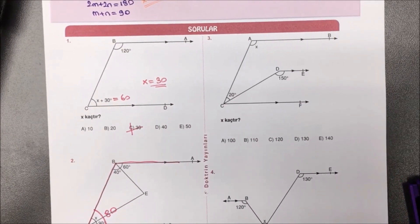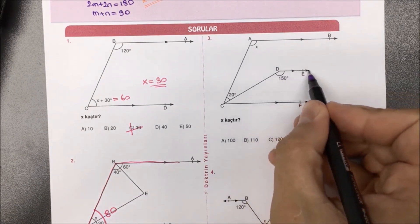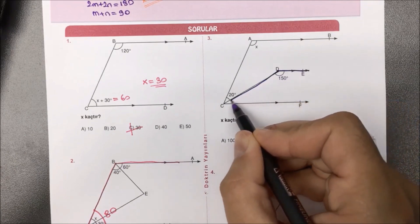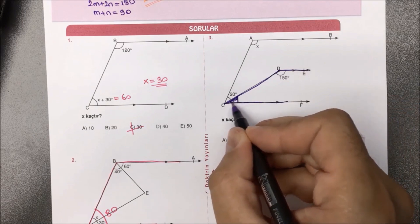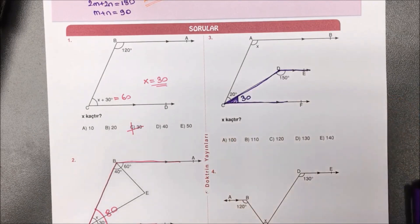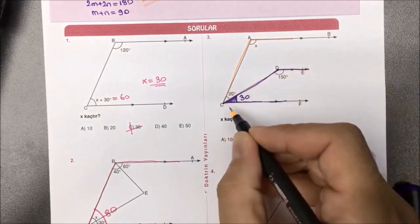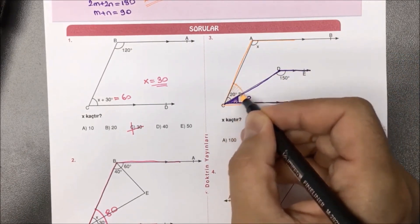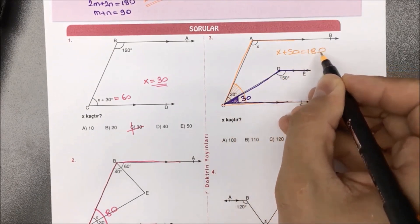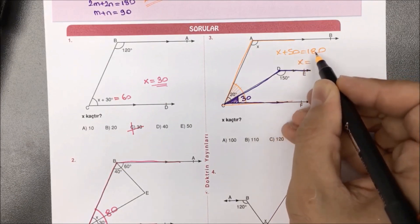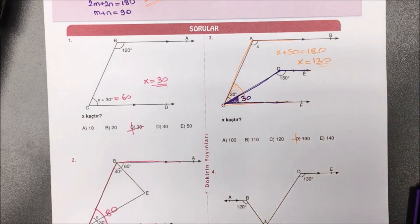Üçüncü soruya bakacak olursak verilenlere göre X kaçtır diye sorulmuş. Yapmamız gereken hemen öncelikle şu alttaki U'yu görmek olacak. Burada 150 derece var; 180 derece tamamlamak için 180'den 150 çıkarttık, 30 derece kaldı. İkinci U'yu da X'in içinde bulunduğu olarak alabiliriz. Bu açımızın tamamı 50 derece; 50'yi karşı tarafa atarsak 180'den 50 çıkartırsak aradığımız yanıt 130 olarak bulunmuş olur.